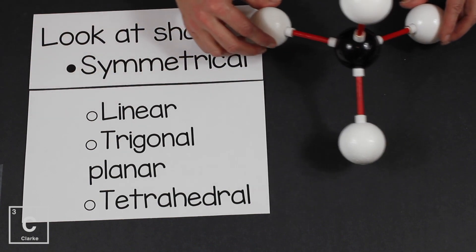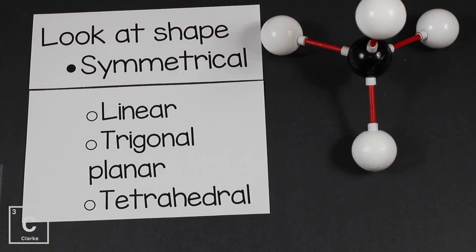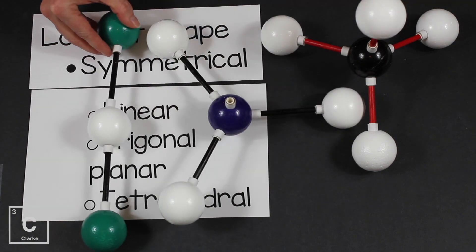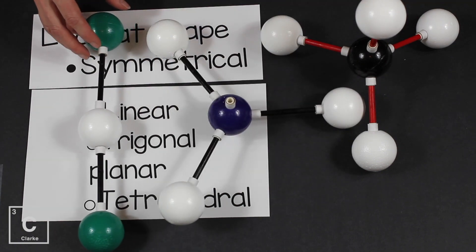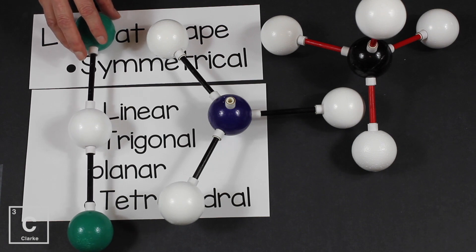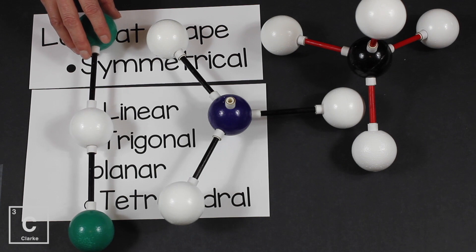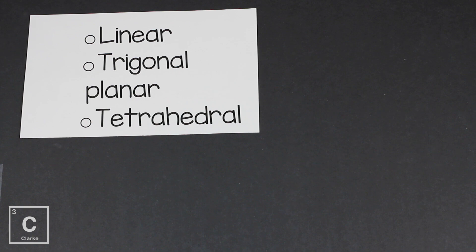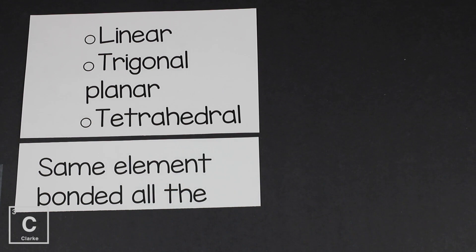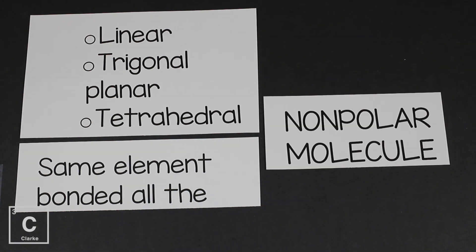I don't know if you've noticed, one thing all of these models have in common, there's no lone pairs on the central atom. That's my helpful tip. No lone pairs on the central atom? Symmetrical. So let's get back to talking about polar and nonpolar. If the shape is symmetrical and it has the same element bonded all the way around the central atom, that's a nonpolar molecule. No one wins tug-of-war, nonpolar.